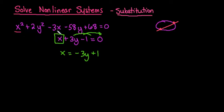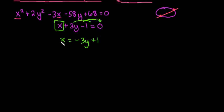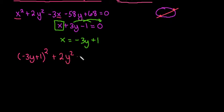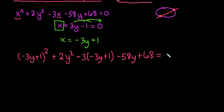Wherever I have an x in the first equation, I'm going to replace it with the expression negative 3y plus 1. So I substitute in: negative 3y plus 1, all squared, plus 2y squared, minus 3 times negative 3y plus 1, minus 58y plus 68. Now this expression only has one variable in it, so we're going to simplify it.